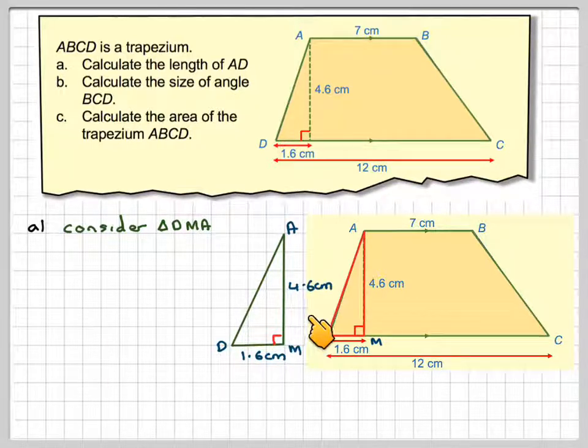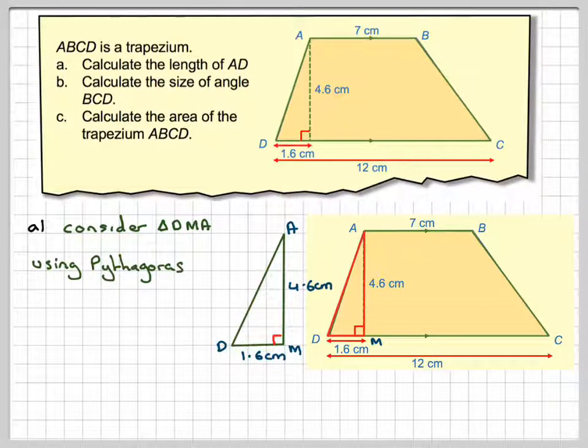Drawing it out, this is 1.6 centimetres, this is 4.6 centimetres. We're missing this side. So this is an application of Pythagoras' theorem.